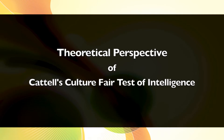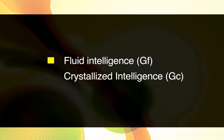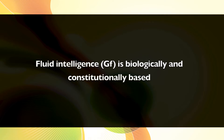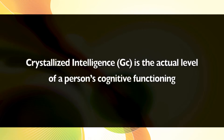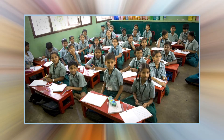Now the theoretical perspective of Cattell's Culture Fair Test of Intelligence. Cattell and Horn used factor analysis to study the structure of intelligence. They argued that general intelligence exists and consists of two factors: fluid intelligence and crystallized intelligence. Whereas fluid intelligence is biologically and constitutionally based, crystallized intelligence is the actual level of a person's cognitive functioning, based on the augmentation of fluid intelligence through socio-cultural and experiential learning, including formal schooling.